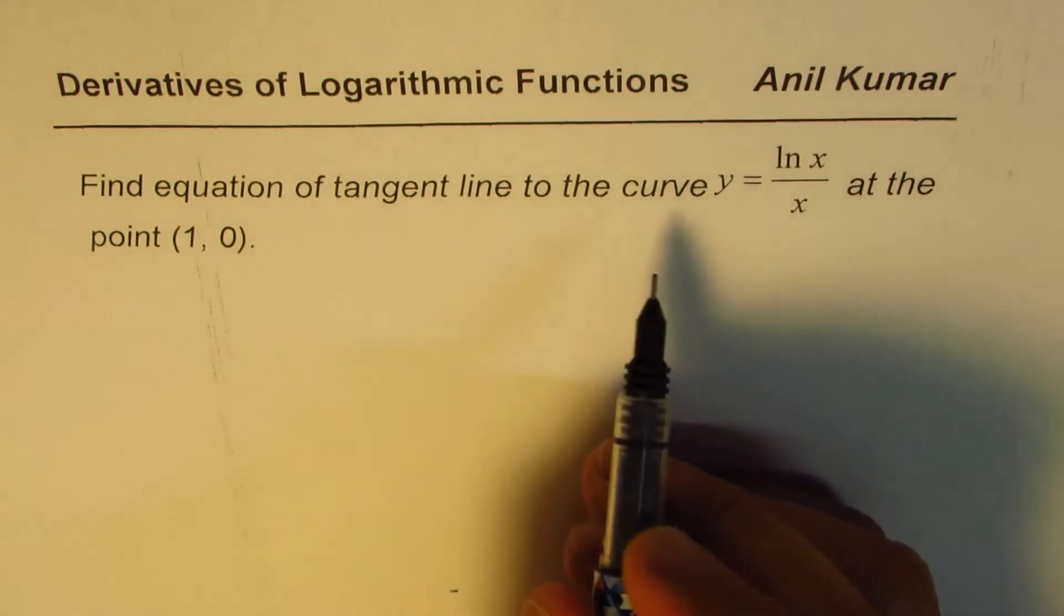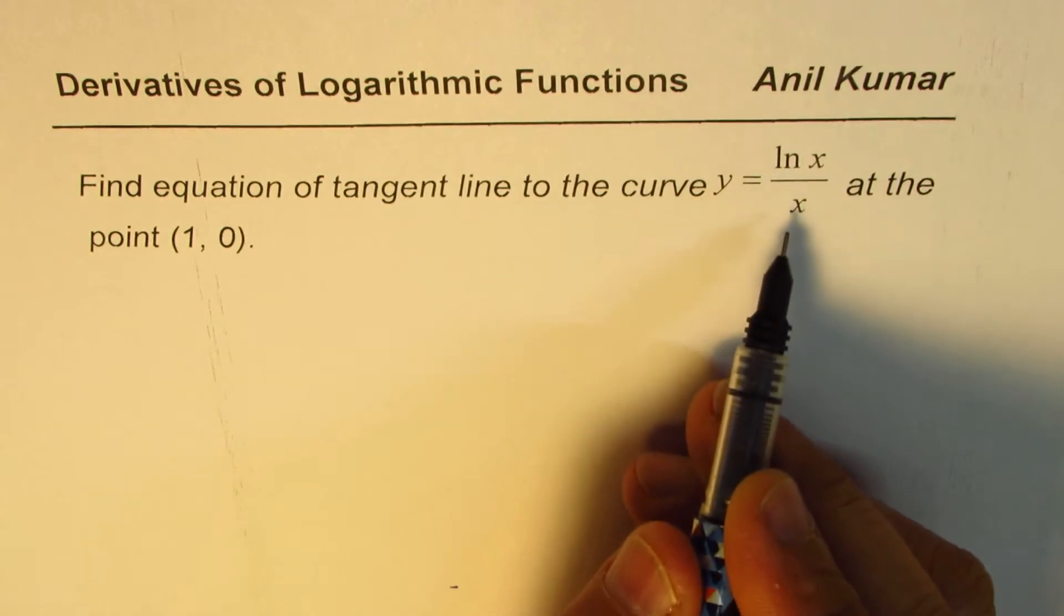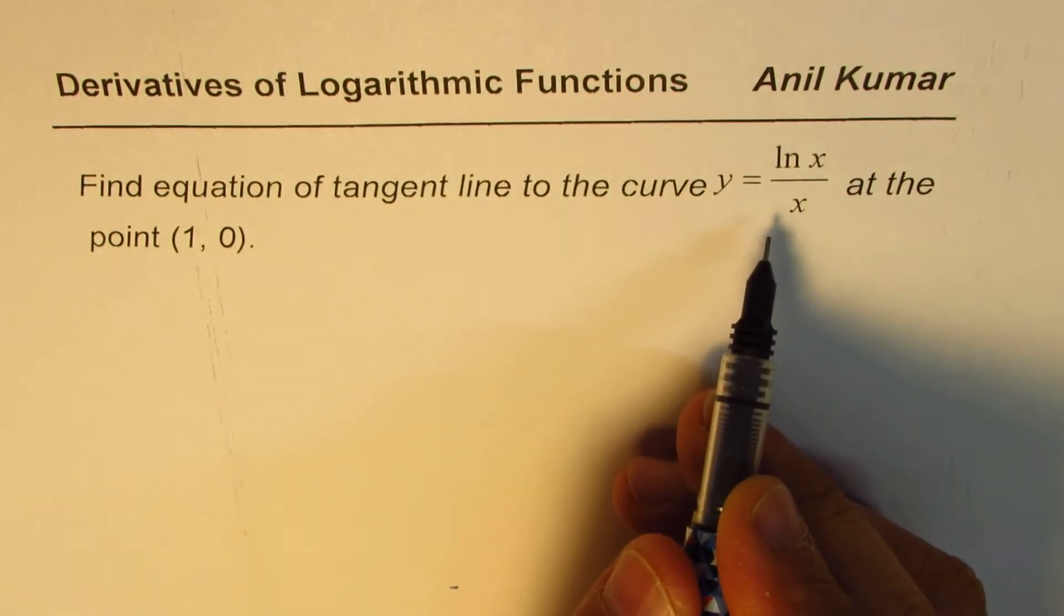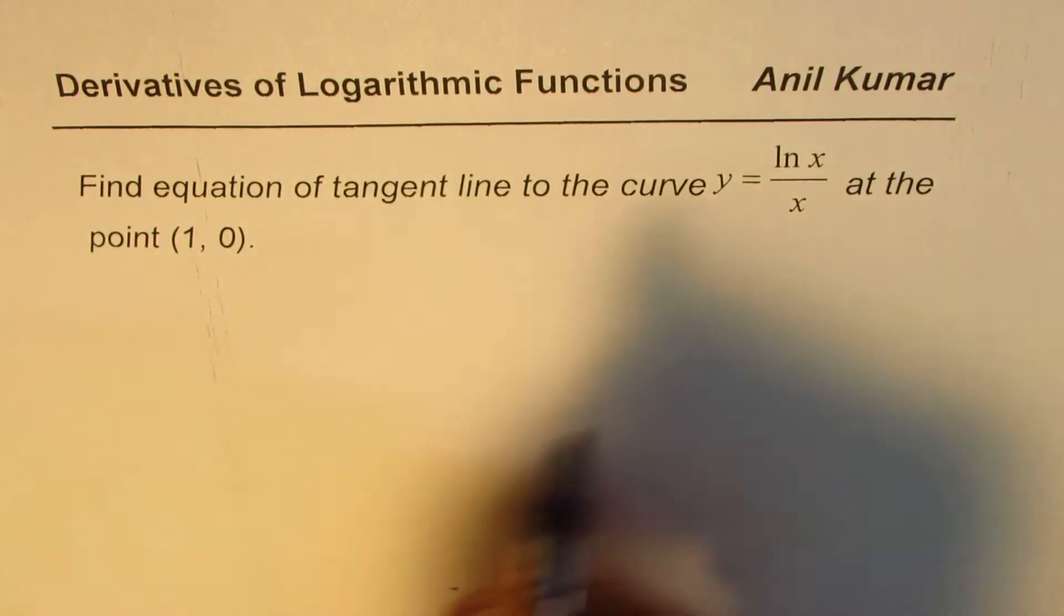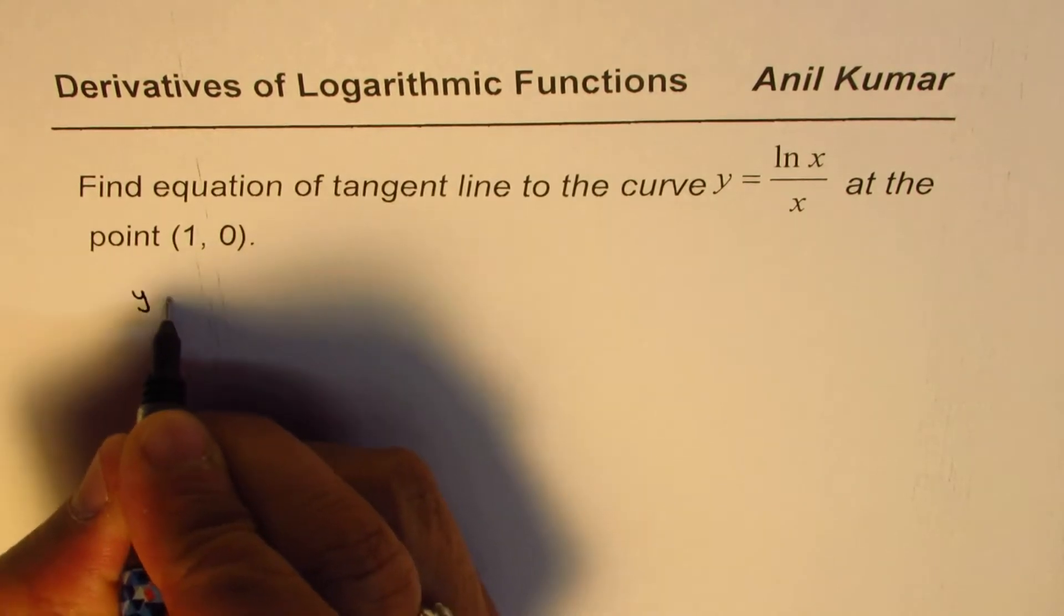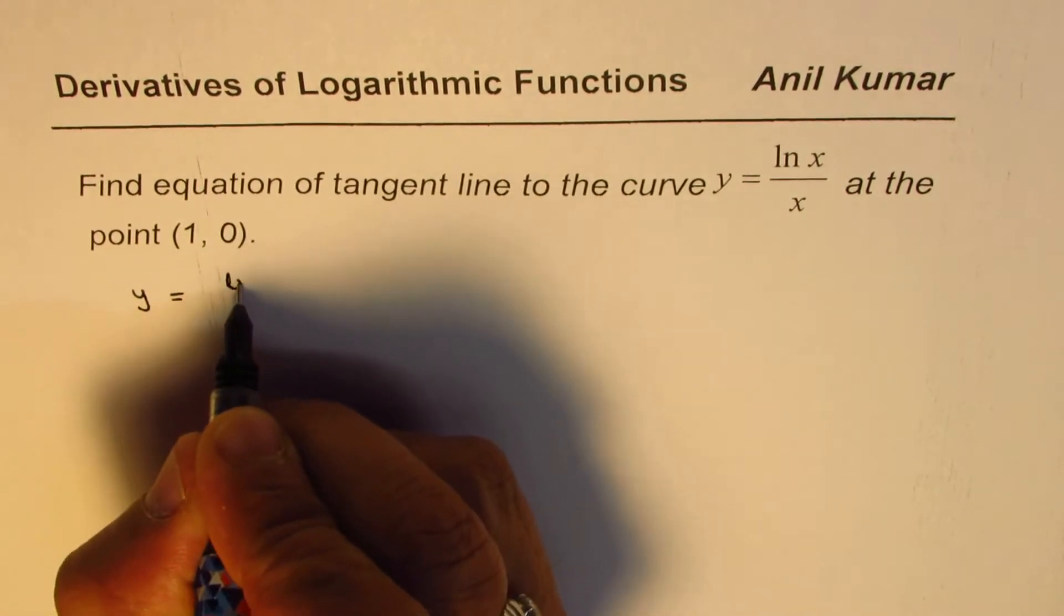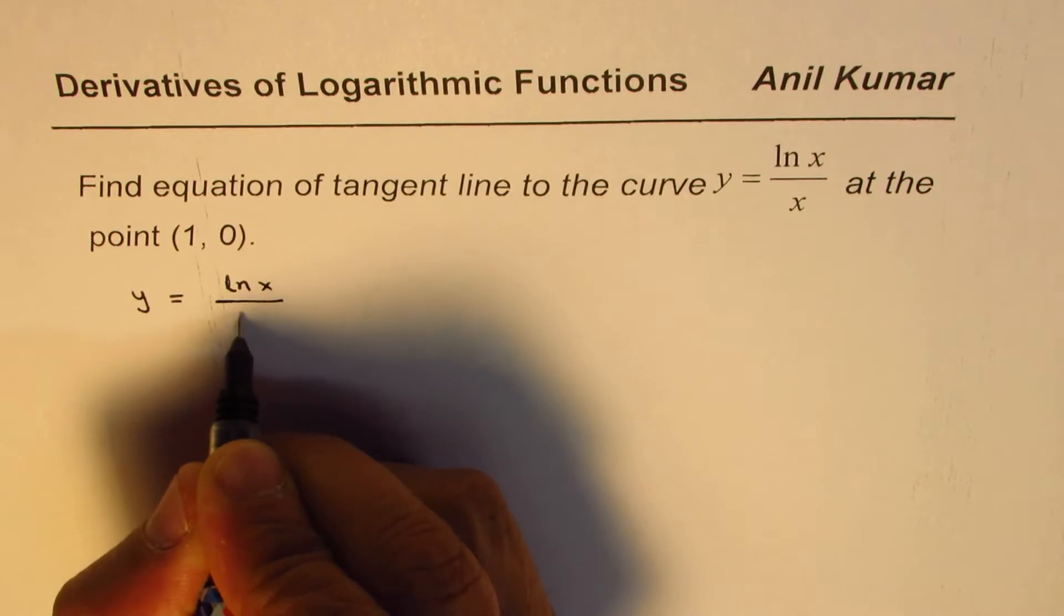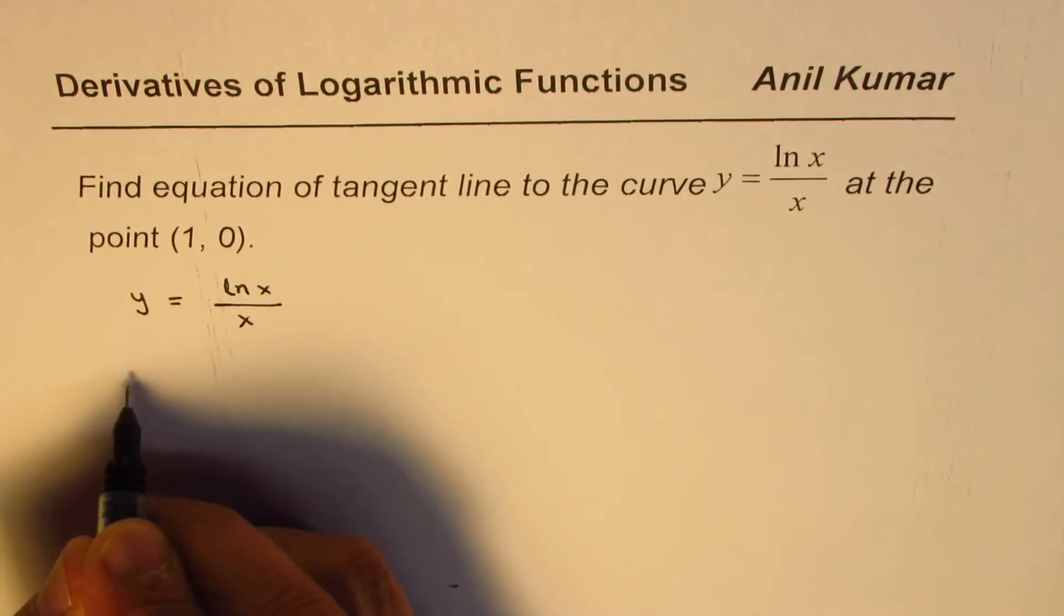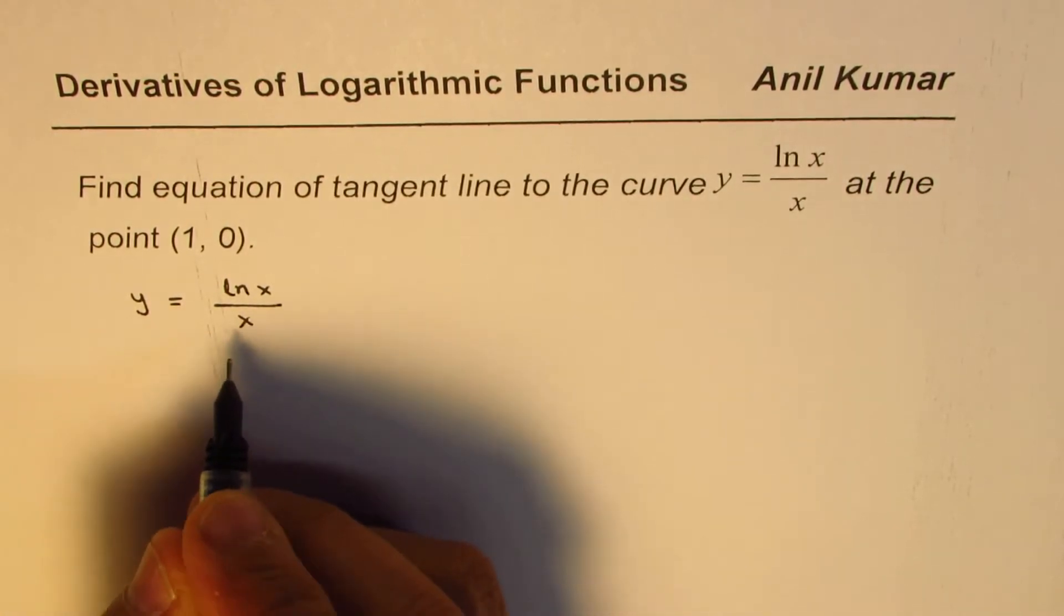So to find the equation of tangent line, let's find the derivative of this function so that we get the slope at the given point. Function given to us is y equals ln x over x. Derivative of this function we can find using the quotient rule.